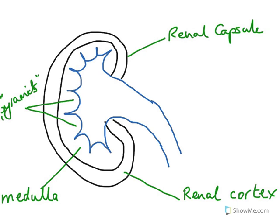The medulla — whereas in the renal cortex you have a lot of filtration happening — in the medulla you have reabsorption. While there's some reabsorption happening in the renal cortex, the medulla is very important in controlling the amount of water that's reabsorbed back into the blood from the filtrate. It's also very important in controlling the ion content or salt content of the filtrate, which in turn controls the pH of it.